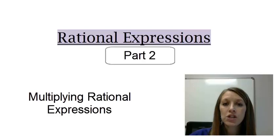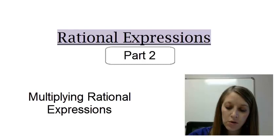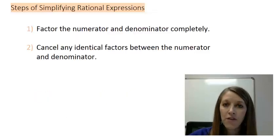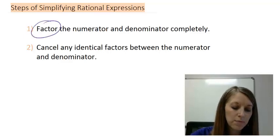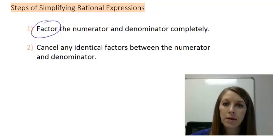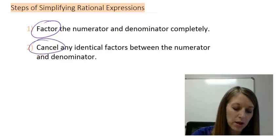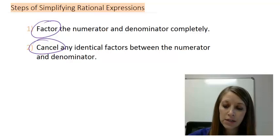Now, multiplication is just an extension of simplification. So let's review the steps of simplifying rational expressions. We had two very simple steps. We need to factor both the numerator and the denominator individually, because that puts it in multiplication form. And when our factors are multiplied, then we can cancel any factors that are identical.